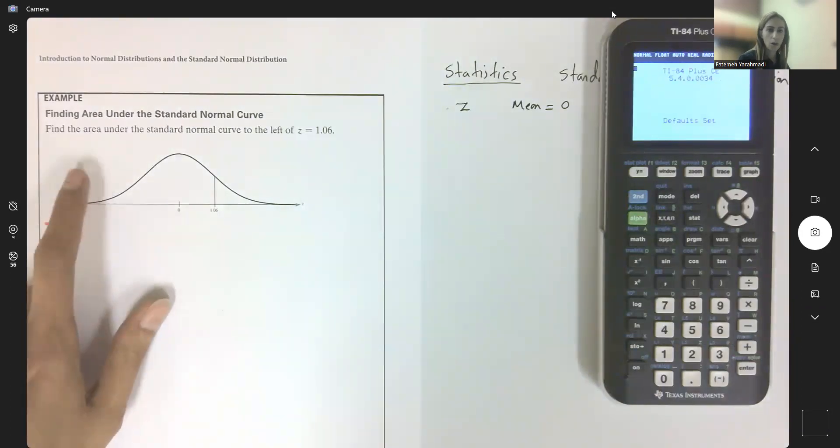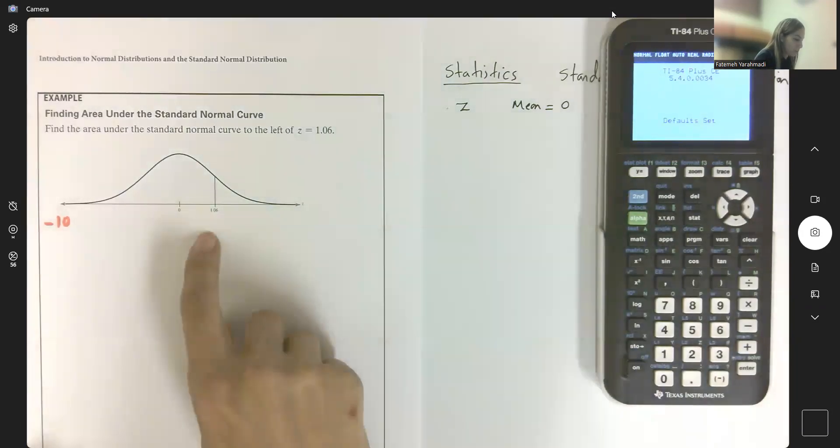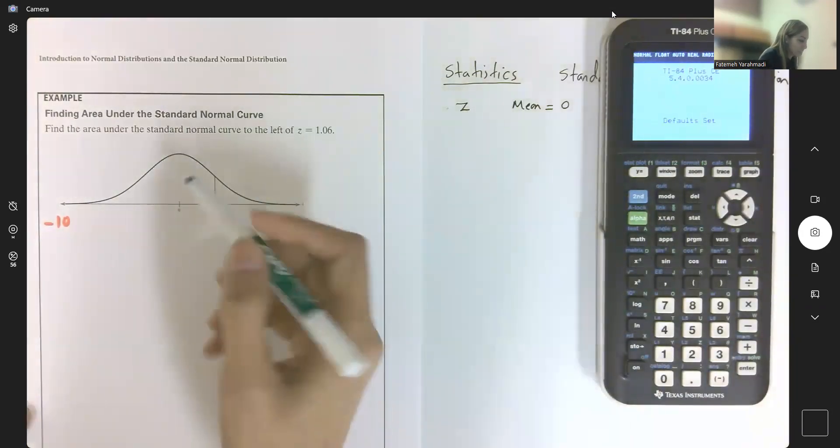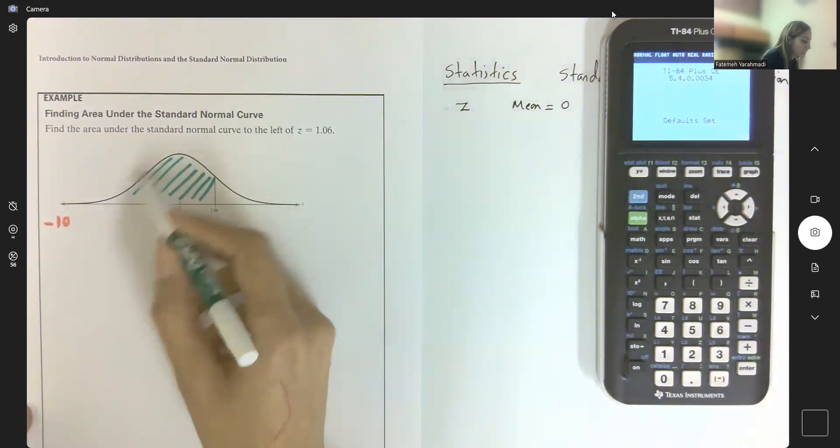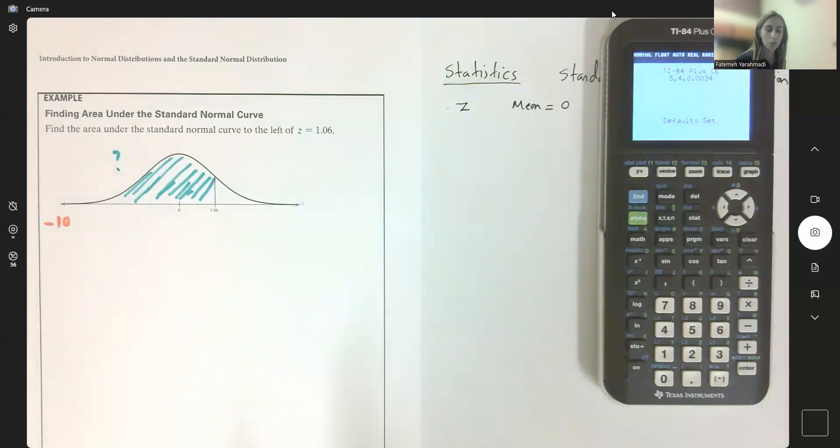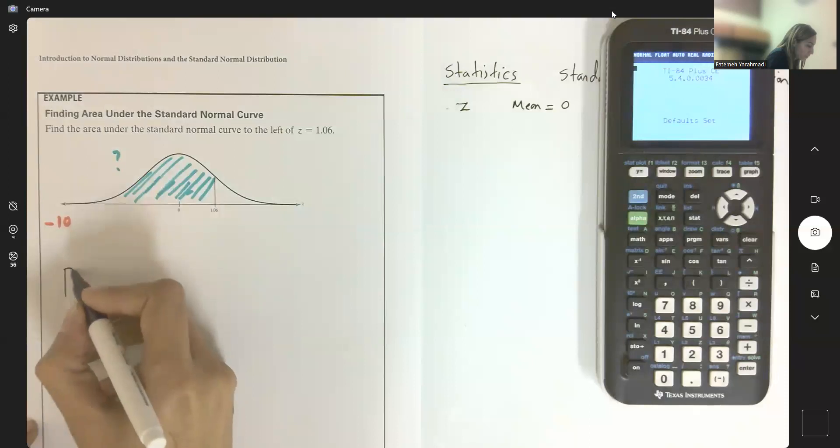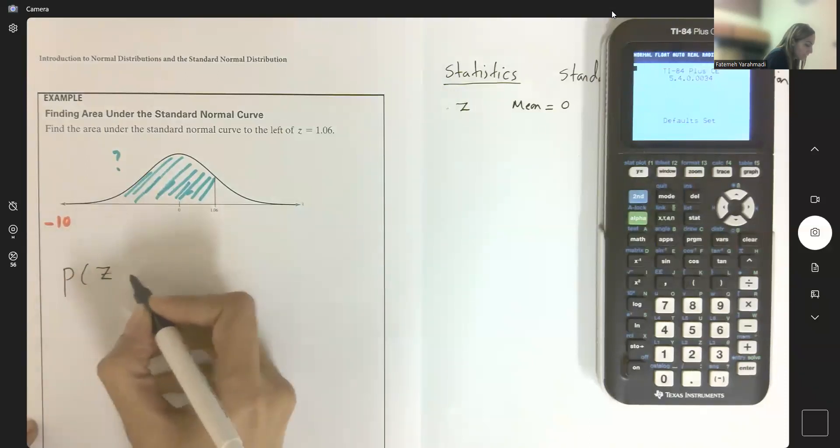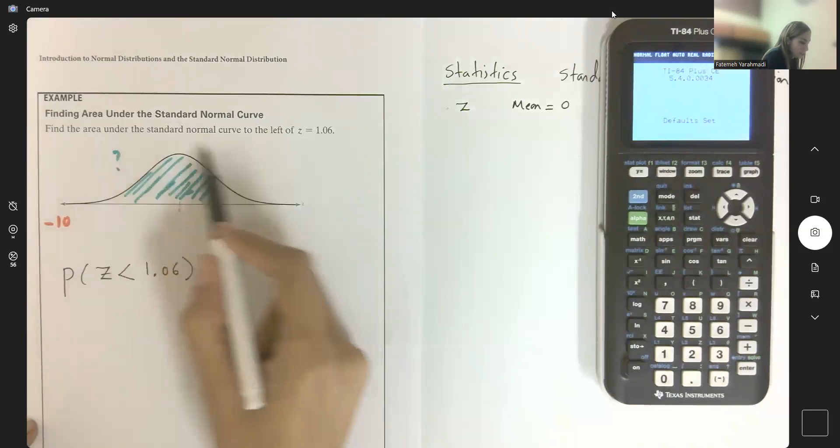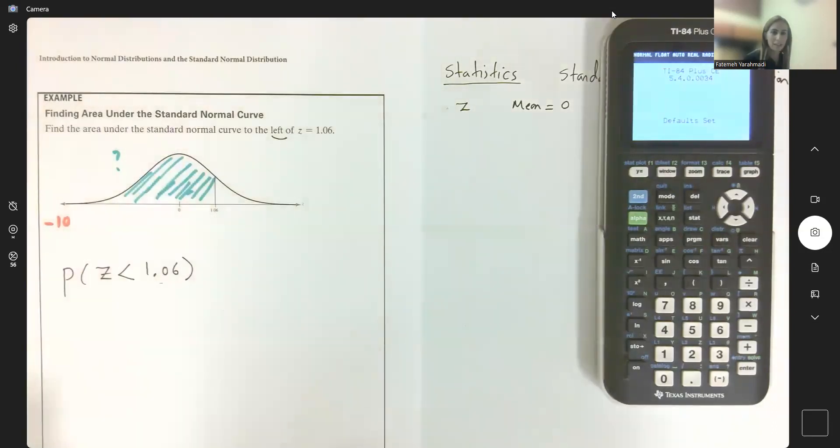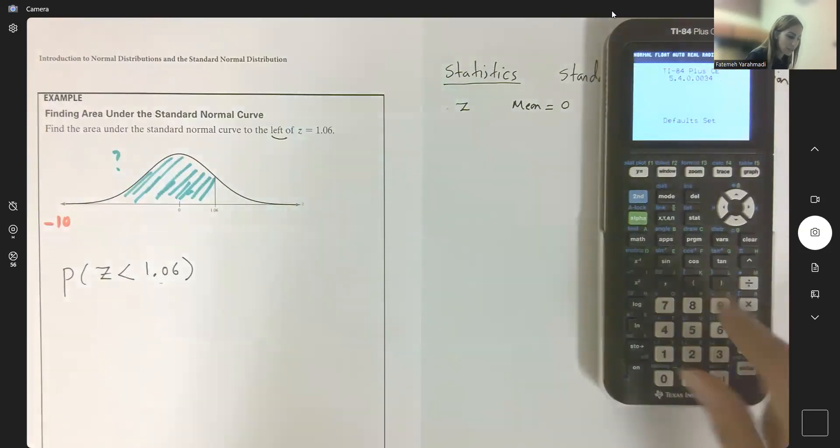What is the area, what is the probability to the left? I need to shade the left-hand side of 1.06. This is my z value. Mathematically speaking, I can write: what is the probability that z is less than 1.06? On the left, less than.